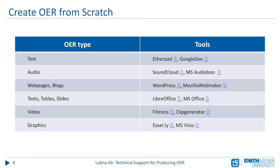There are different tools and software that could be used for creating open resources from scratch, and most of them are surely known to most of you. For example, we can use Google Docs to create text, and SoundCloud for producing audio. For text, tables, and slides we could use Microsoft Office or OpenOffice. And of course for videos, graphics, and other resources there are also a good collection of tools available.